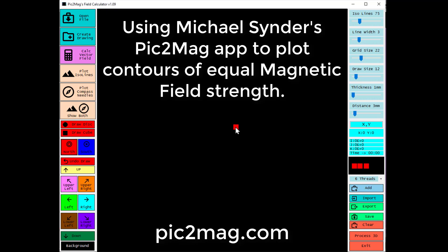Using Michael Snyder's Pick2Mag app to plot contours of equal magnetic field strength. You can find this at pick2mag.com.